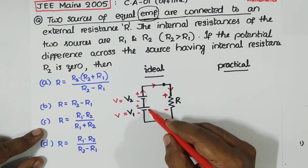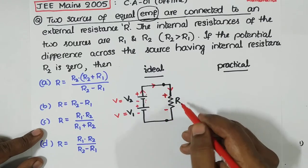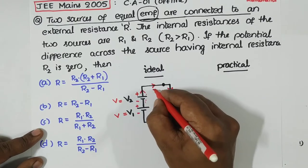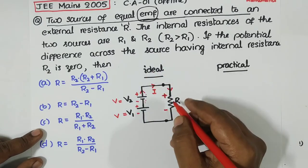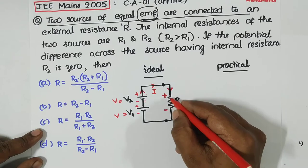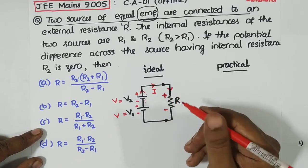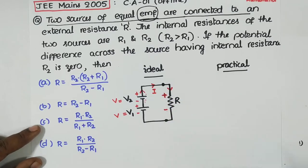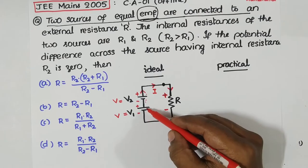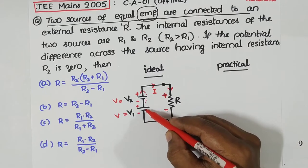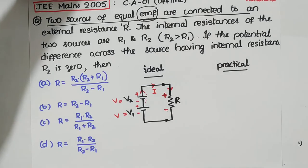We have two active sources. Current I is flowing around the circuit. The voltage across R is I×R — a voltage drop — because current is entering at plus and leaving at minus. This is the ideal case. In the ideal case, the internal resistance of the voltage sources is zero.